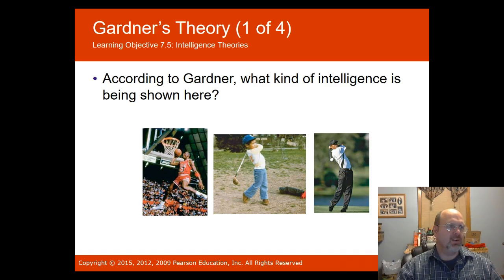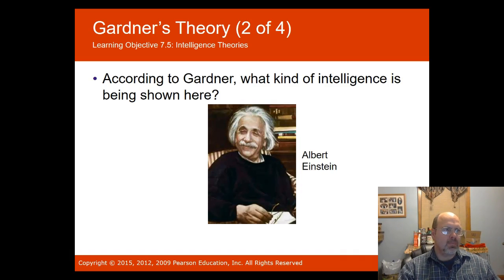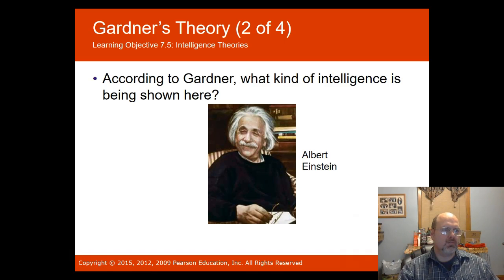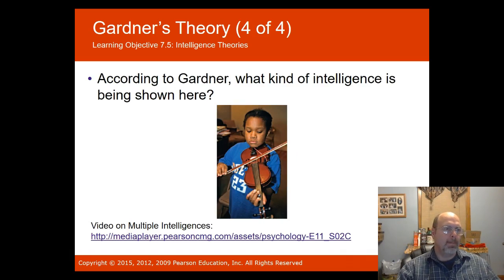According to Gardner, the intelligence shown by someone like Michael Jordan or a kid golfing — understanding your body — is called movement intelligence. Albert Einstein is most associated with logical-mathematical intelligence. Visual-spatial intelligence is shown in art and spatial reasoning. Musical intelligence is another category. There's a video in the PowerPoint explaining multiple intelligences you can watch.